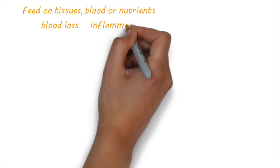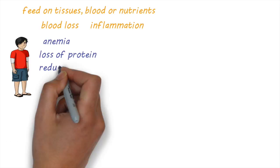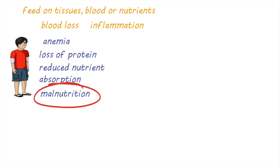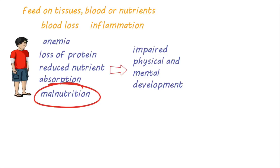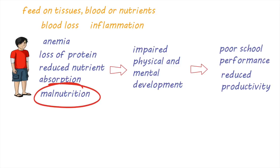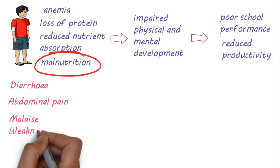The chronic blood loss leads to anemia. The loss of protein and reduced absorption of nutrients can lead to nutritional impairment and malnutrition. When these occur over a long period of time, it can lead to impaired physical and mental development, especially in children, which in turn can result in poor school performance and reduced future economic productivity. Other symptoms include diarrhea, abdominal pain, malaise, weakness, and loss of appetite.